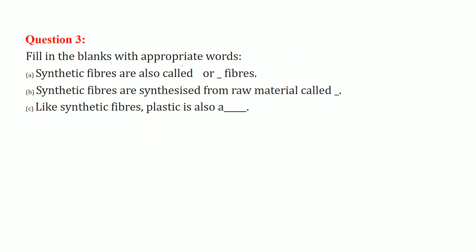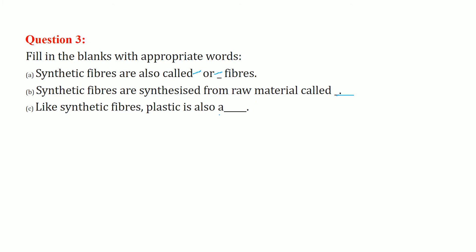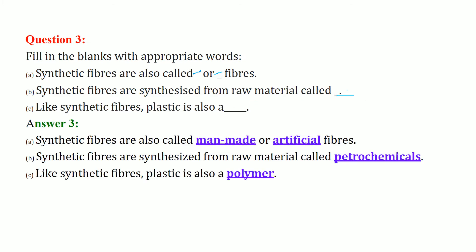Fill in the blanks: Synthetic fibers are also called artificial or man-made fibers. Synthetic fibers are synthesized from raw material called petrochemicals. And like synthetic fibers, plastic is also a polymer.